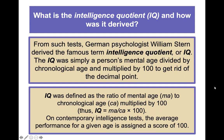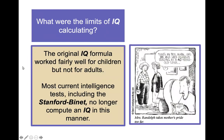From Terman's work, German psychologist William Stern derived the famous term Intelligence Quotient, or IQ. IQ is simply a person's mental age divided by chronological age, multiplied by 100 to remove the decimal point. On contemporary intelligence tests, the average performance for a given age is assigned a score of 100 — so an average score across almost all intelligence tests today is considered to be 100.